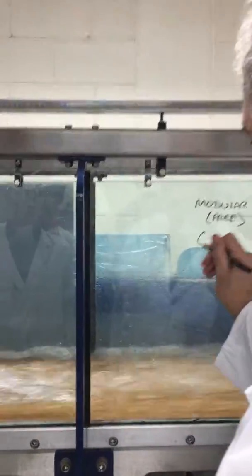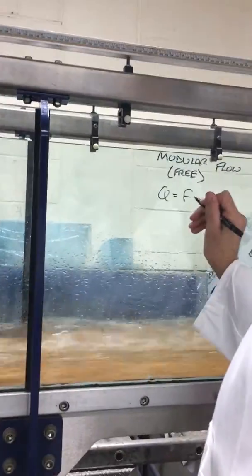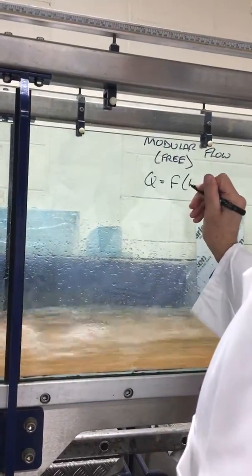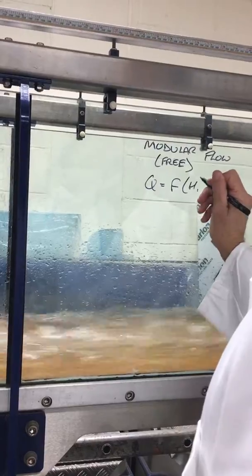We've got a modular flow there, and what we're saying is that Q is a function only of H1, which is the upstream depth. We called it H, but it's H1.